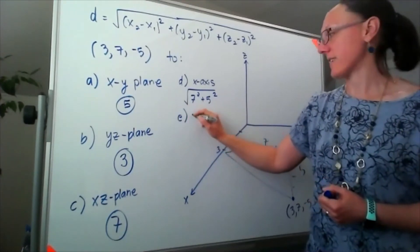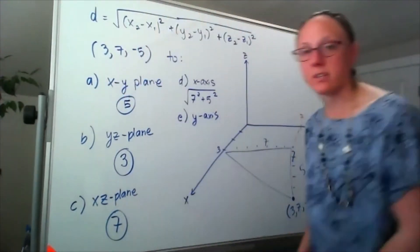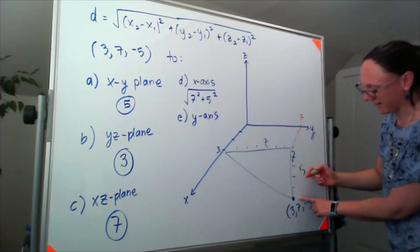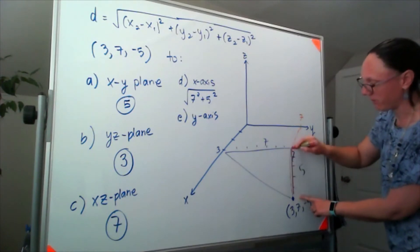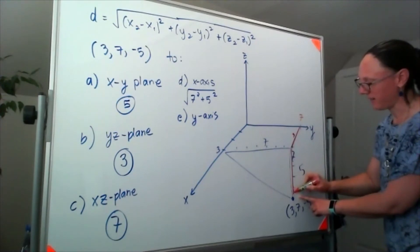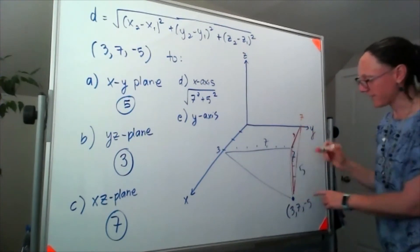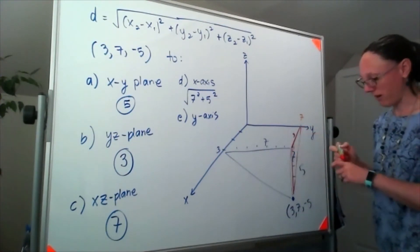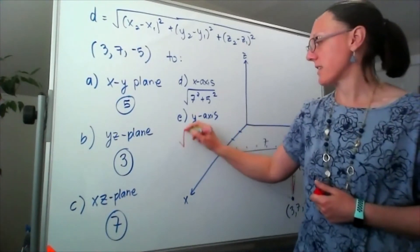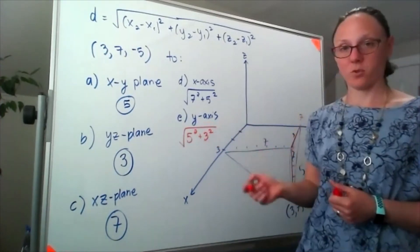So e was asking us the distance to the y axis. So my picture is about to get messy. But if I'm standing at that point and I need to get back to the y axis, I have this triangle where that side is 5 again, and this side is 3. And it's kind of, I'll try to draw this in 3D, but this triangle, it's still a right triangle with one side of 5 and one side of 3. Which means that distance is a square root of 5 squared plus 3 squared.